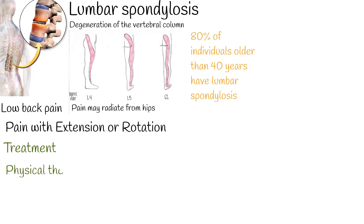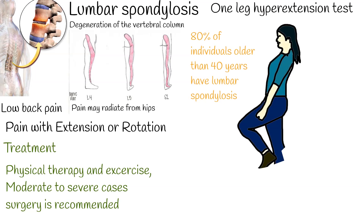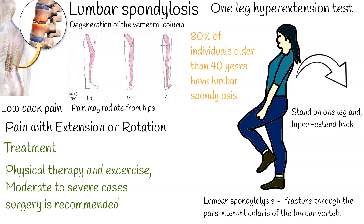Treatment: In mild cases, physical therapy can be effective. In moderate to severe cases, surgery is recommended. The one-leg hyperextension test is used to identify lumbar spondylolysis. The patient stands on one leg and, while being supported by the provider, hyperextends their back. If pain occurs, the test is positive, indicating likelihood of lumbar spondylolysis or small fractures of facet joints in the back of the spine.